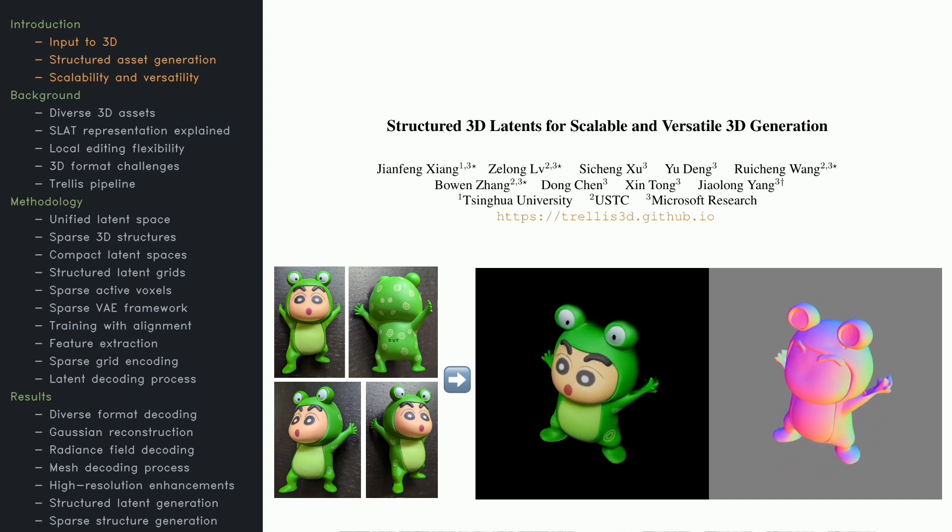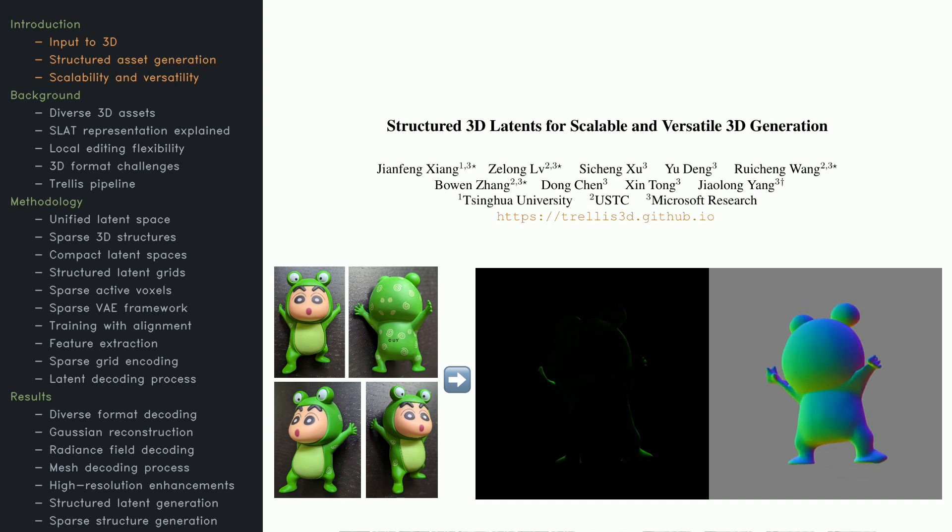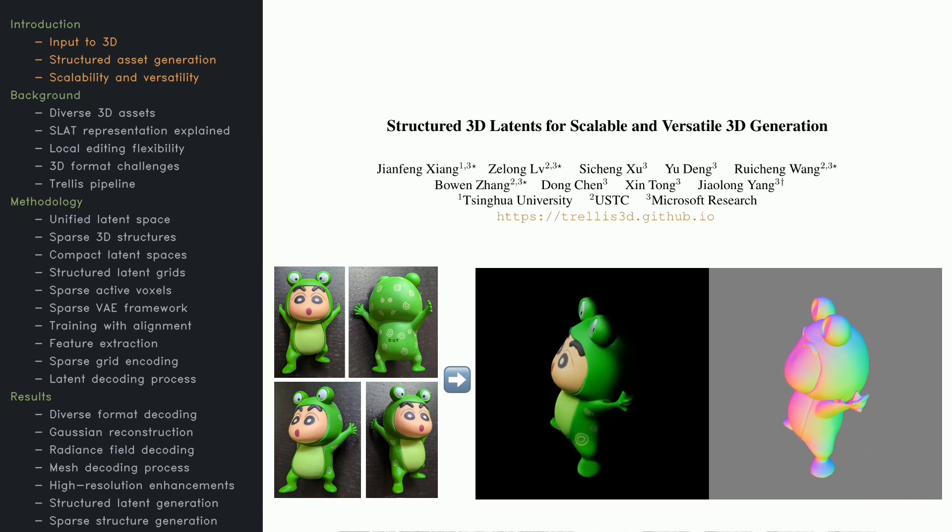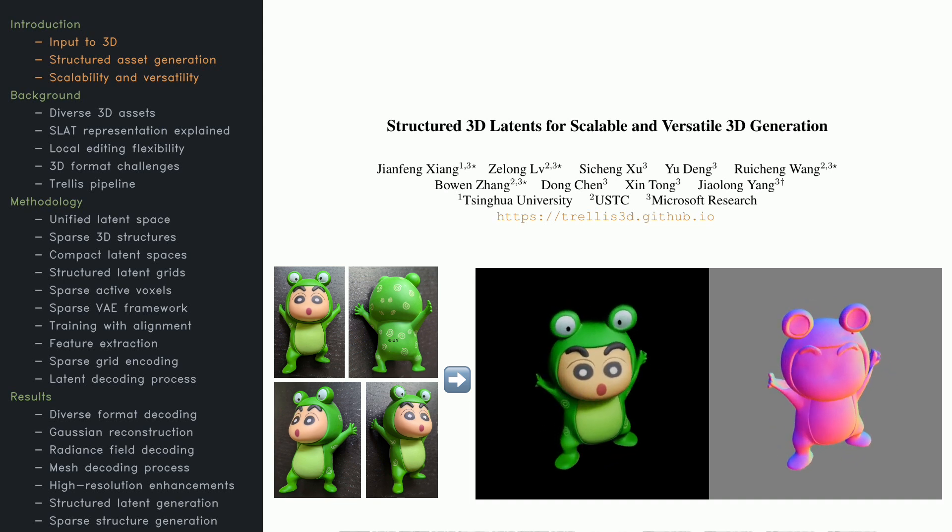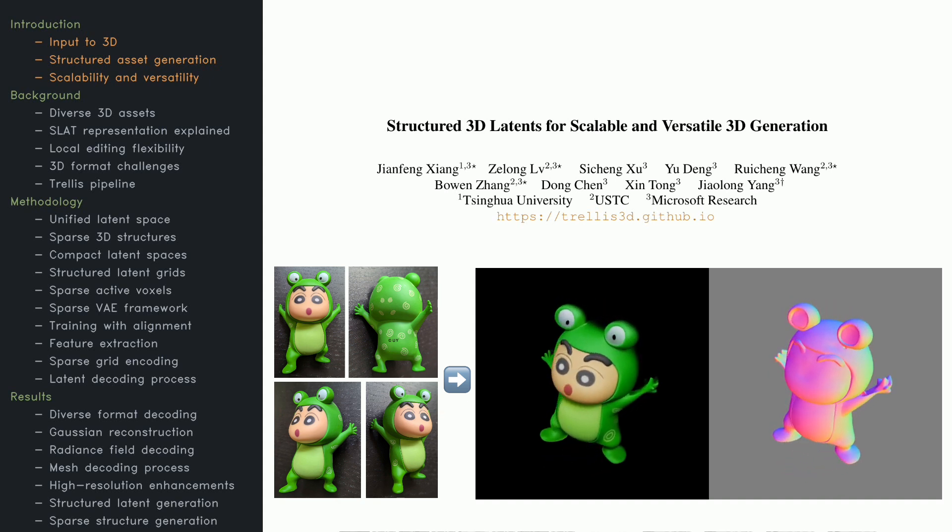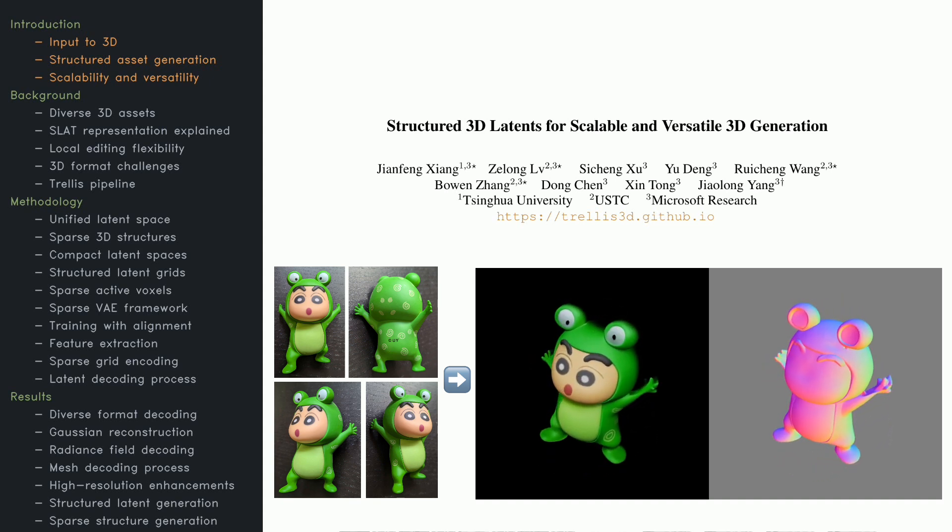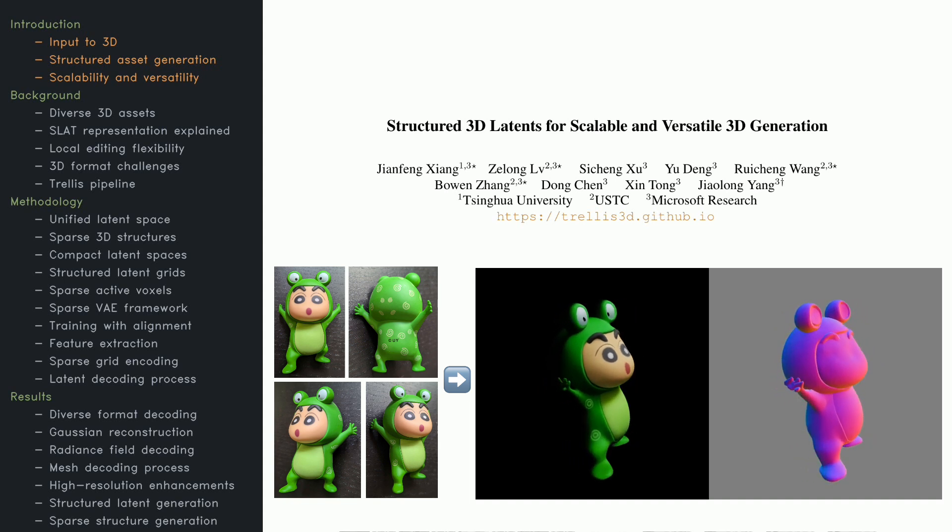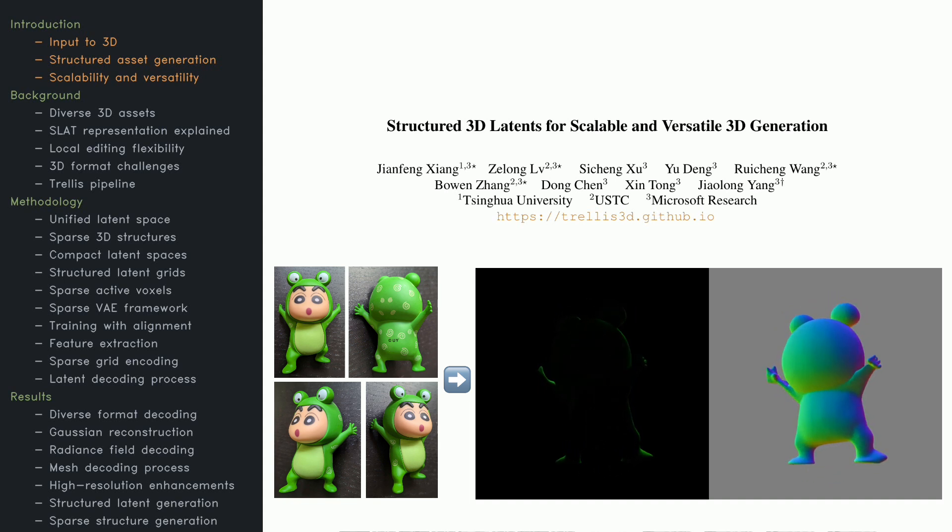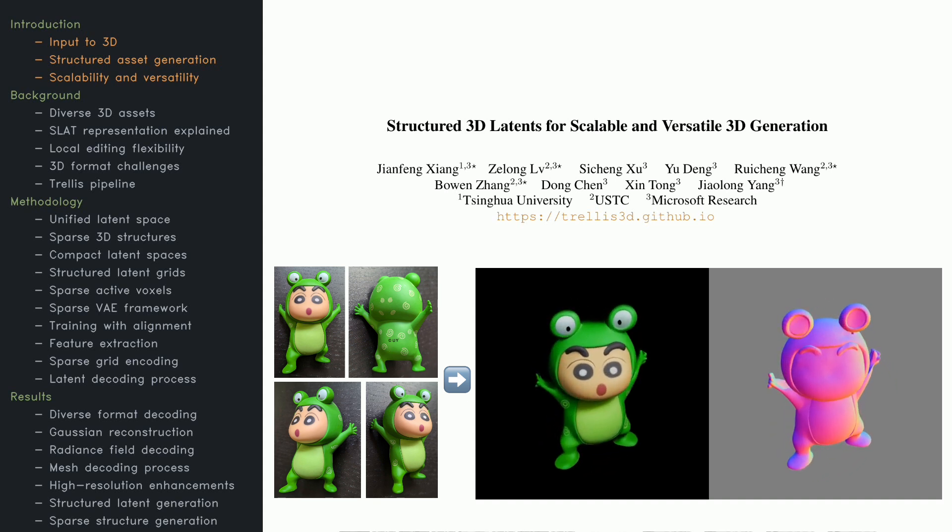Do you know the super hot project called Trellis on Hugging Face? You upload one or a few images of an object and it generates a stunning 3D model almost instantly. Today, we're diving into the groundbreaking paper behind this magic. It's all about structured latents, they call it SLAT. SLAT works by combining sparse 3D structures with dense visual features extracted from multiple views of the object. These features are fused into a latent grid that can decode into formats like meshes, radiance fields, or 3D gaussians, all in stunning detail.